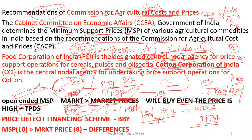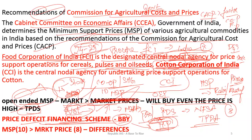There is a scheme called the Price Deficit Financing Scheme, also known as Bhavantar Bhugtan Yojana, implemented in Madhya Pradesh. Under this scheme, if the market price is lower than the MSP, the government does not need to procure directly. Instead, farmers sell the product at the market price, and the government pays the difference between the MSP and the market price to the farmers, ensuring good remuneration without requiring full government procurement.